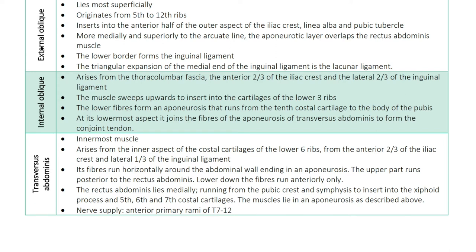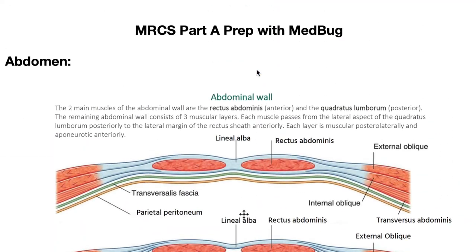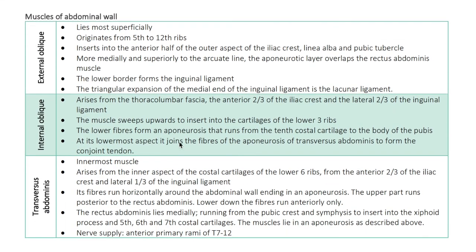The external oblique is on the external side of the abdominal wall. The internal oblique is just below it, and transversus abdominis is the innermost muscle. The external oblique lies superficially and originates from the fifth to twelfth ribs — this is important to remember.